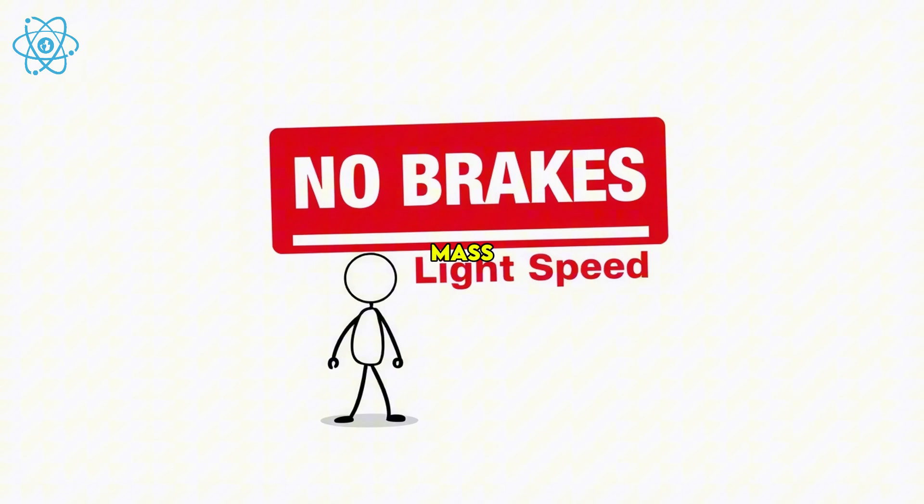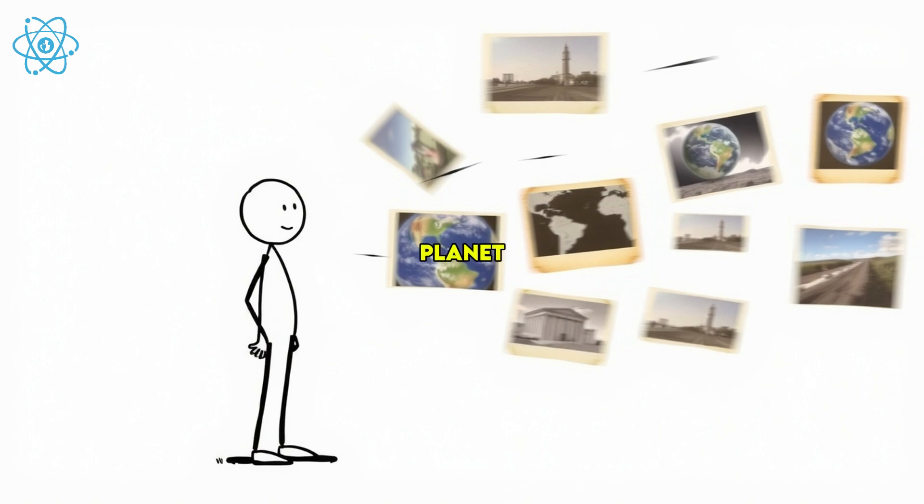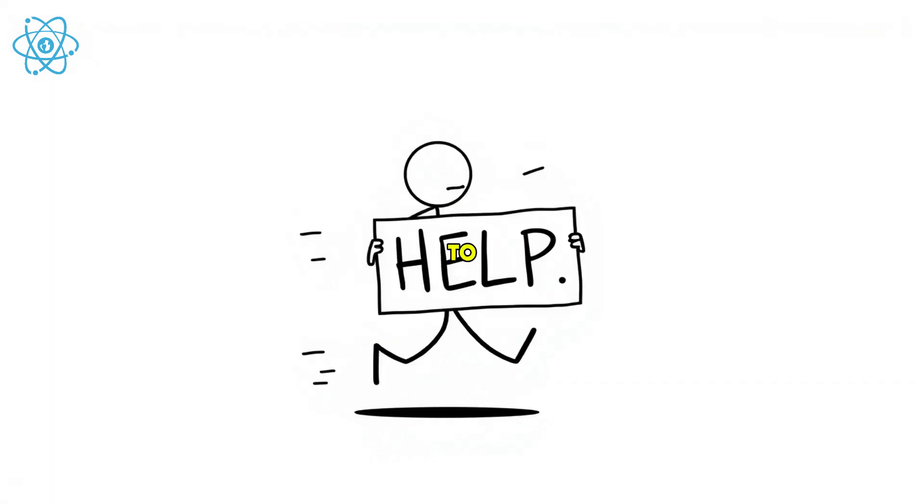So what happens if you run at the speed of light? Your mass becomes infinite. You destroy space-time. Your brain can't keep up. You turn the planet into soup. You get to the future alone and you explode if you stop.